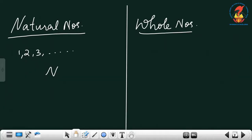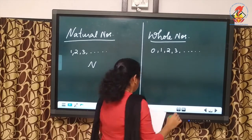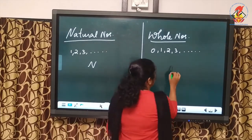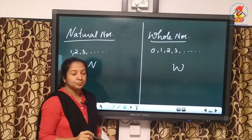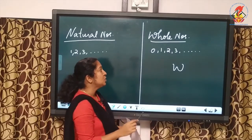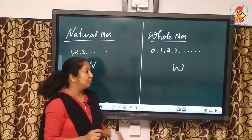Then whole numbers: 0, 1, 2, 3, etc. The collection of whole numbers is represented by the symbol W.